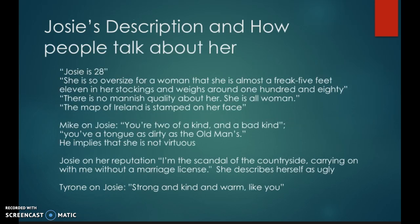Then let's look at Josie's description and how other people talk about her. O'Neill says Josie is 28. He also says she is so oversized for a woman that she is almost a freak — 5 feet 11 in her stockings and weighs around 180. There is no mannish quality about her. She is all woman. The map of Ireland is stamped on her face. This gives us a pretty distinct idea of what that body type looks like.